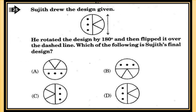Sujit drew a design. He rotated it by 180 degrees and then flipped it over the dashed line — which of the following is Sujit's final design? When he rotated the design by 180 degrees, we get option C. Then, when he flipped it over the dashed line, we get option D as our answer.